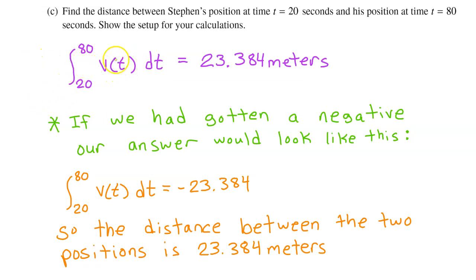By the way, in this case, the displacement turned out to be positive, but it could have been a negative number. And if we had gotten a negative number like this, we would have to add on a conclusion like, so the distance between the positions is 23.384 meters. The distance between two positions is always a positive number. So be careful not to write your answer as a negative.